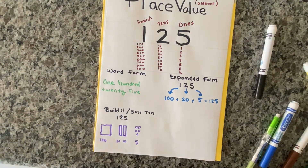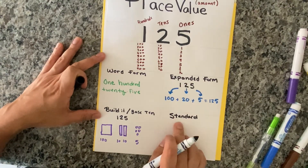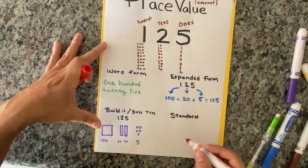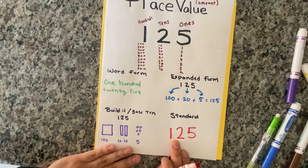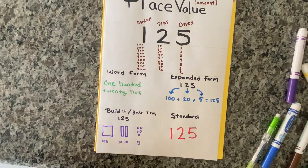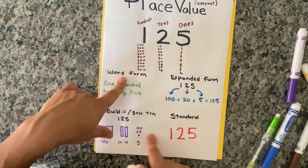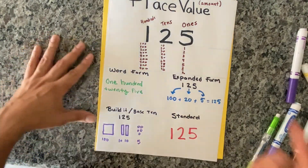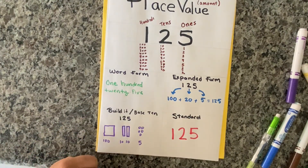Finally, the last way you might see this number is called standard form. Don't be fooled — all it is is just the number written regularly: 125. It's the standard way to write or say it. So these are the four ways you might see this number: word form, expanded form, build it form, or standard form. Don't let it fool you. Now you know the secret — go ahead and practice and get better. Peace.